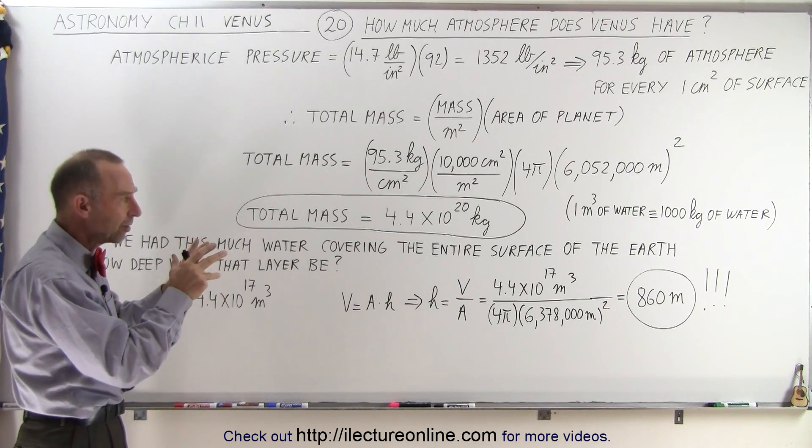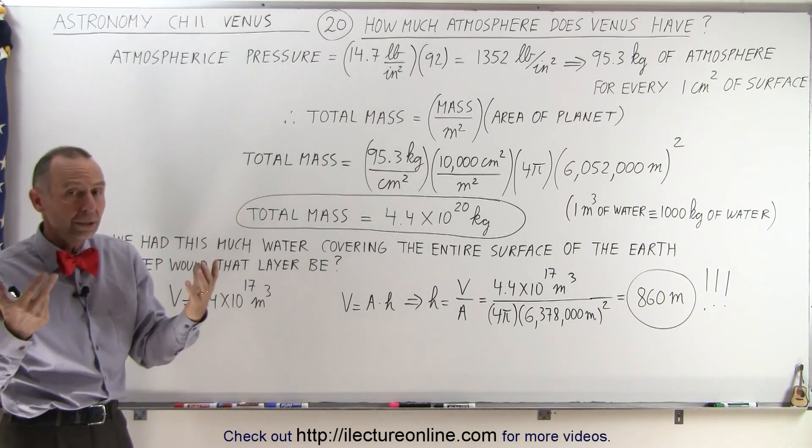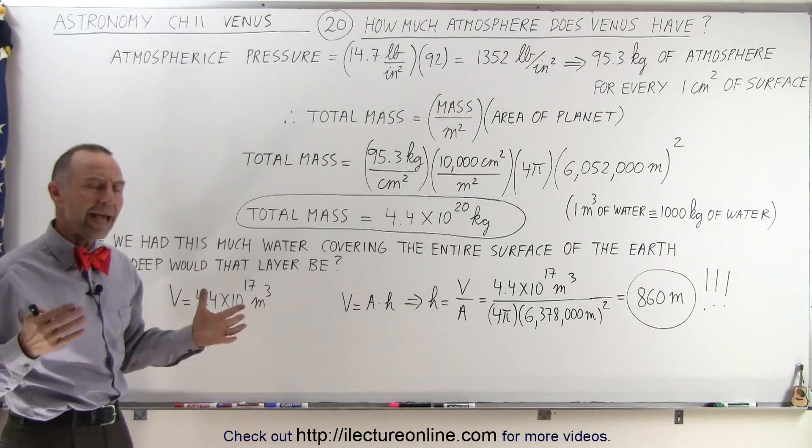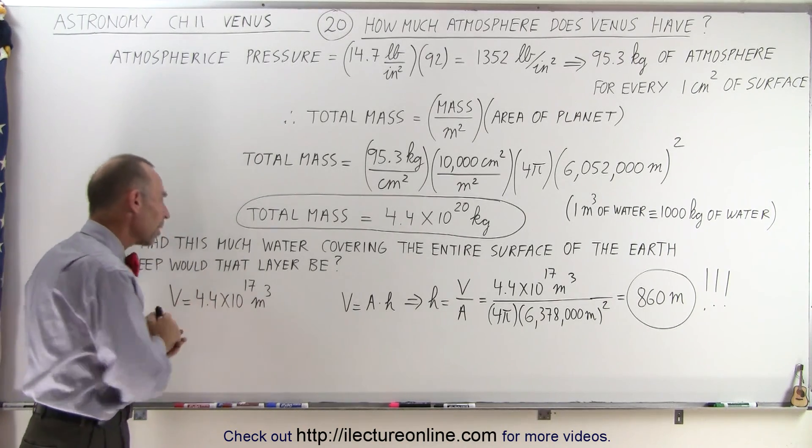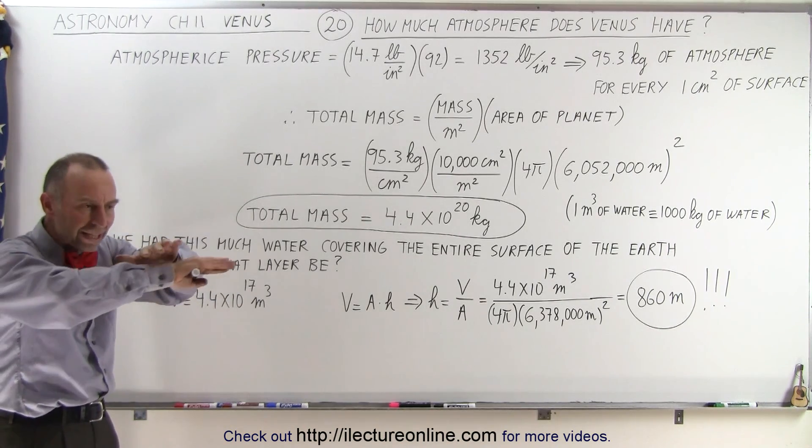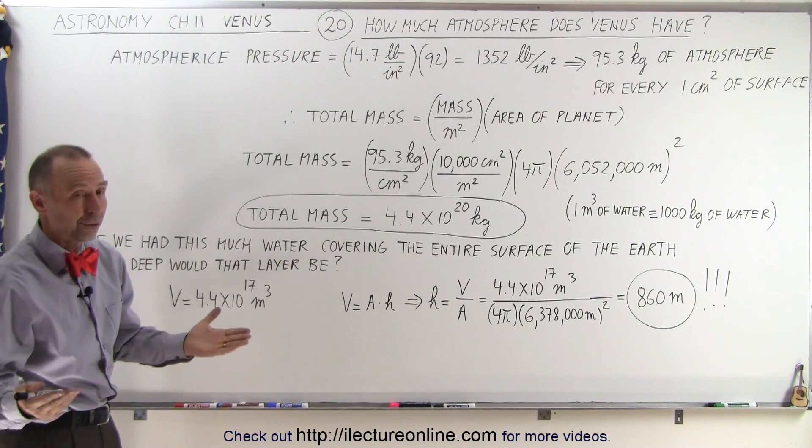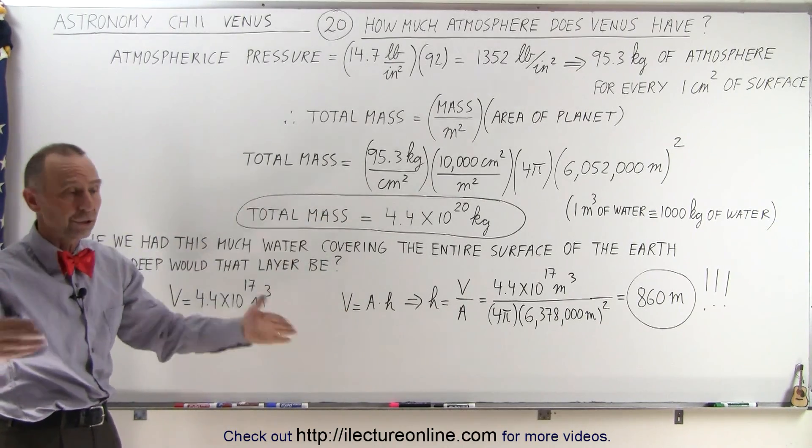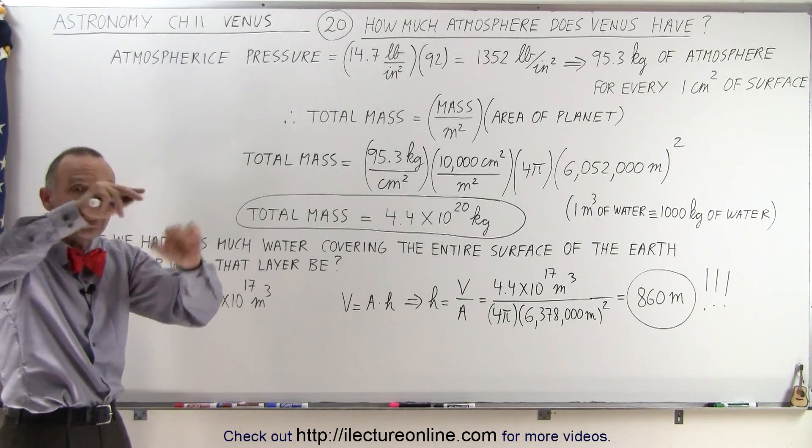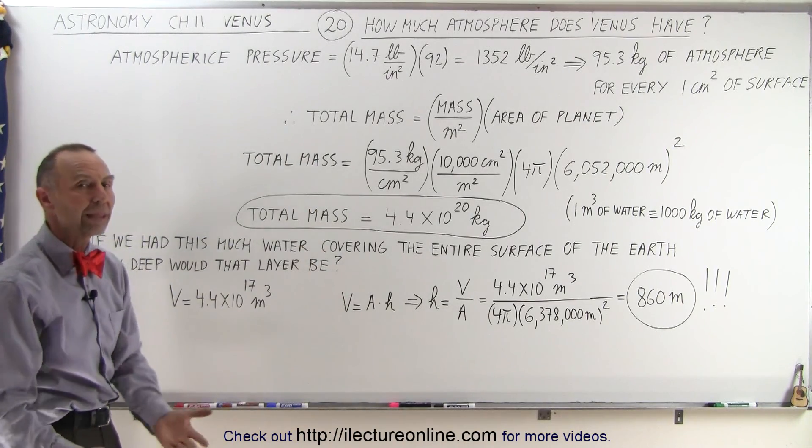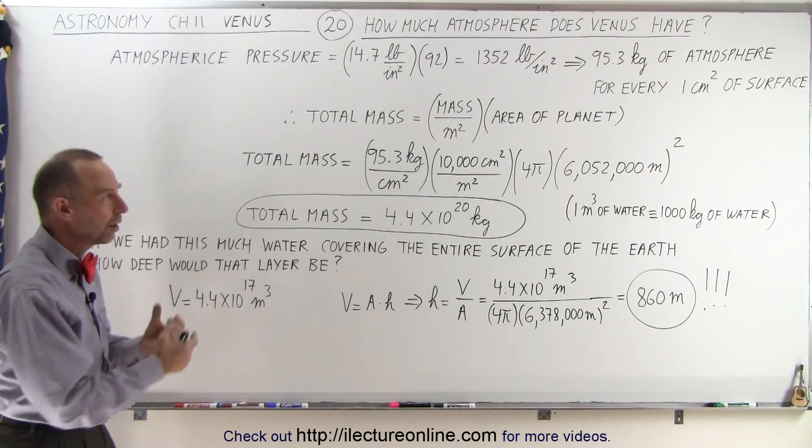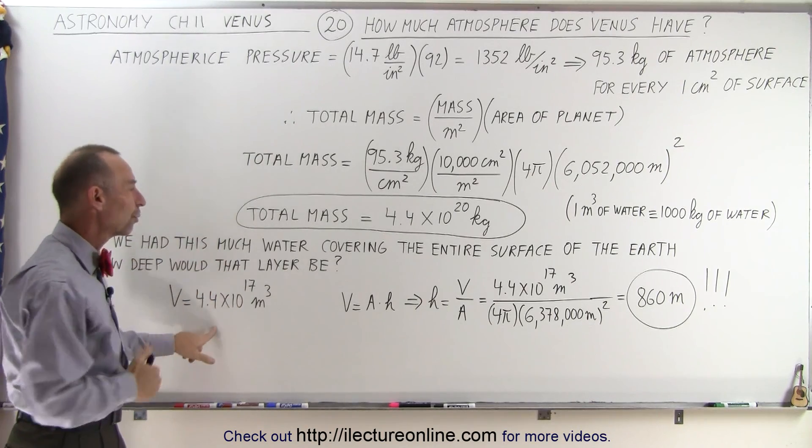So if we take that mass and we turn that into water, then how much water would we have? So let's say we have this much water in volume, and we're going to take that and layer it on top of the planet Earth. So let's say that we have a flat planet Earth, how thick would that layer of water be if we covered the planet Earth with the mass equivalent of the atmosphere of Venus in terms of water?